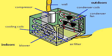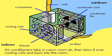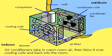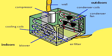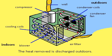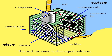Air conditioners are heat exchangers. They take warm air from a room, blow it over cooling coils to remove the heat, and then return it to the room. The heat absorbed by the cooling coils is then blown outdoors.